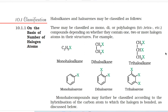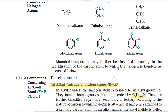10.1 Classification. 10.1.1 On the basis of number of halogen atoms: Haloalkanes and haloarenes may be classified as mono, di, or polyhalogen (tri, tetra, etc.) compounds depending on whether they contain one, two, or more halogen atoms in their structures. For example: mono-haloalkane, di-haloalkane, tri-haloalkane, mono-haloarene, di-haloarene, tri-haloarene.